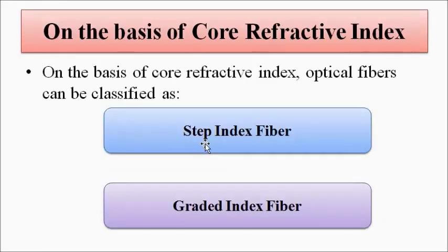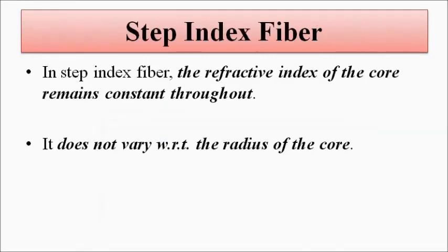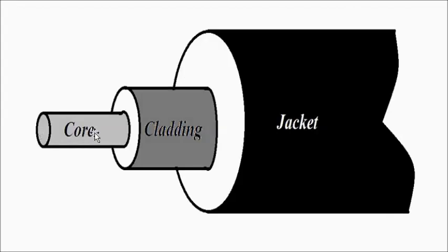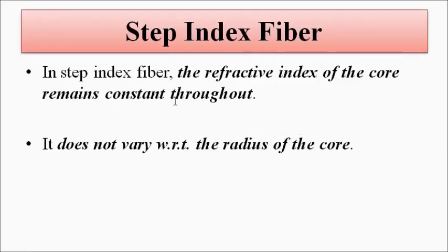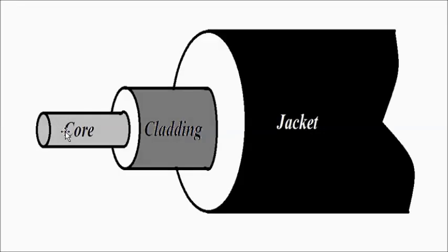On the basis of core refractive index, the optical fibers can be divided into two categories: first, the step index fiber, and second, the graded index optical fiber. In the step index fiber, the refractive index of the core — this innermost cylindrical portion — remains constant throughout the entire region of the core, the entire volume of the core. With respect to the change in radius or distance from the center of the core, the refractive index does not change.